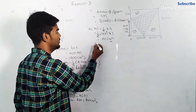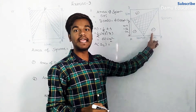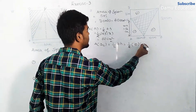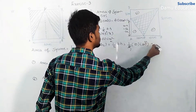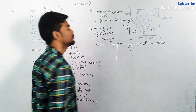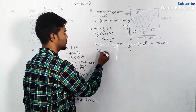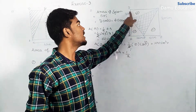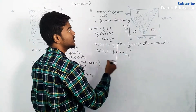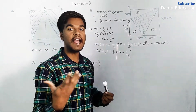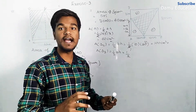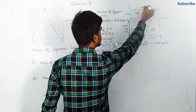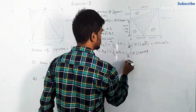Area of triangle 2 is calculated next. For triangle 3, the base is 8 centimeter and height is 20 centimeter — you can take base as 8 and height as 20 or interchange them — so half into 8 into 20 equals 80 centimeter square.